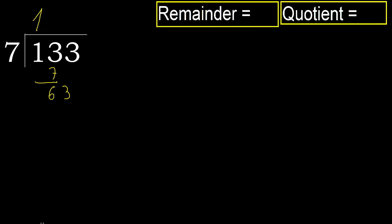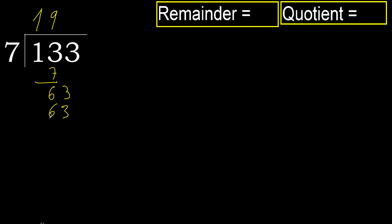63. 7 multiplied by 9 is 63. 63 is not greater. 63 minus 63 equals 0. Next. That is not numbered, therefore finish it.